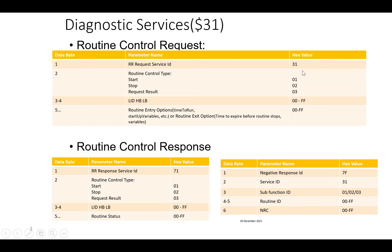For the response, if it is a positive response, 40 gets added to 31, giving 71, followed by the sub-function (01, 02, or 03), followed by the routine ID (two bytes), and then the routine status record. For a negative response, the appropriate negative response code would be given.